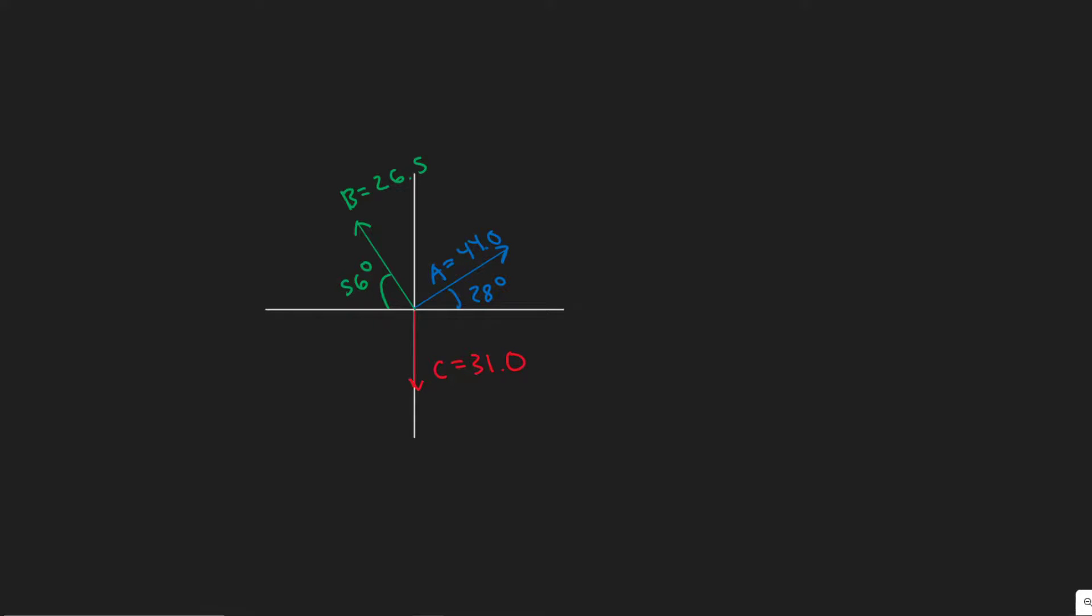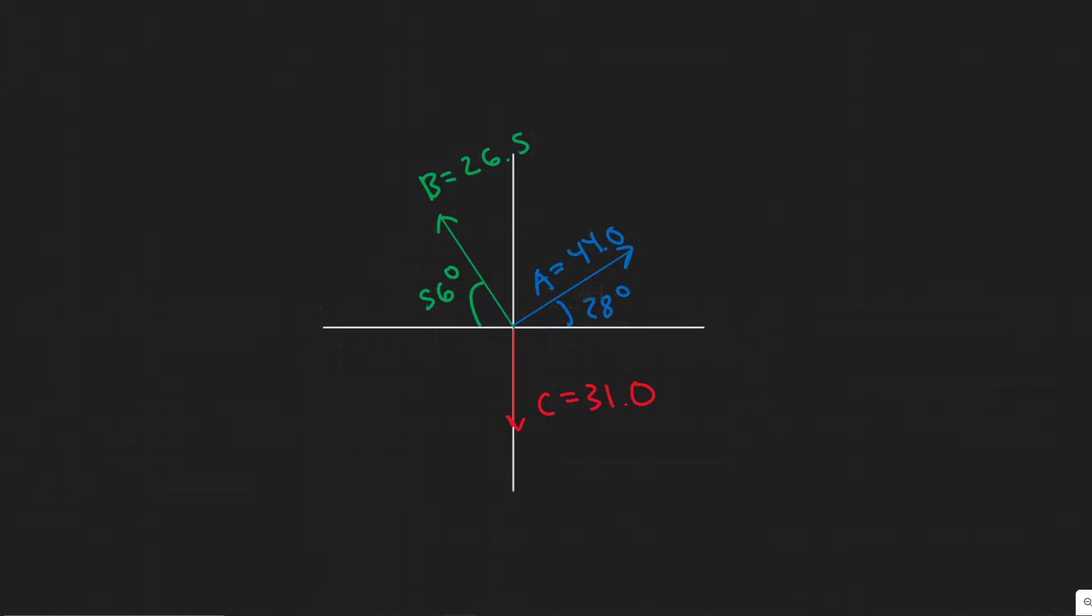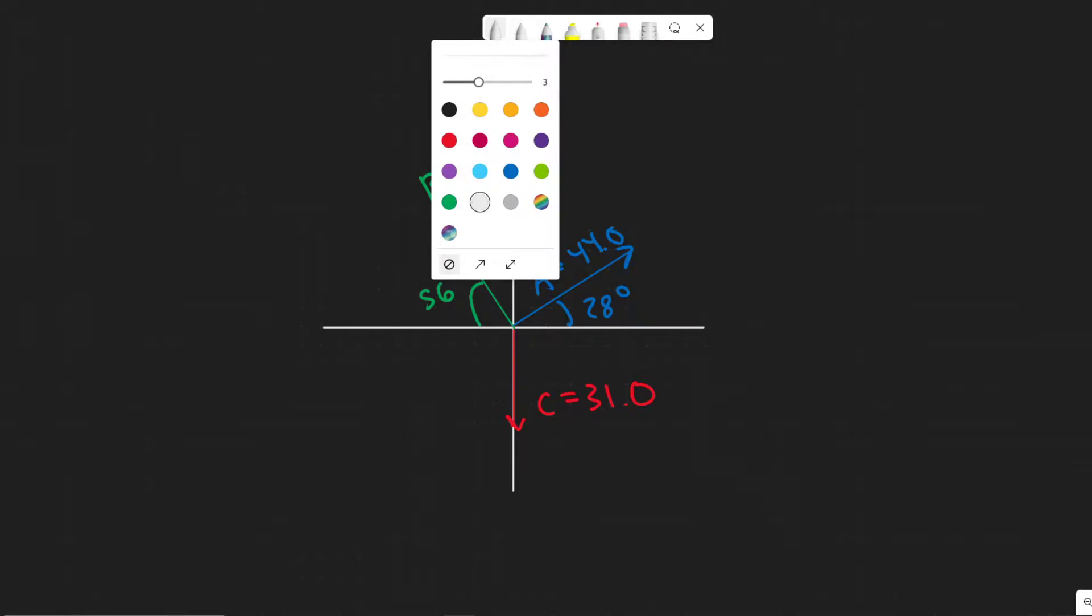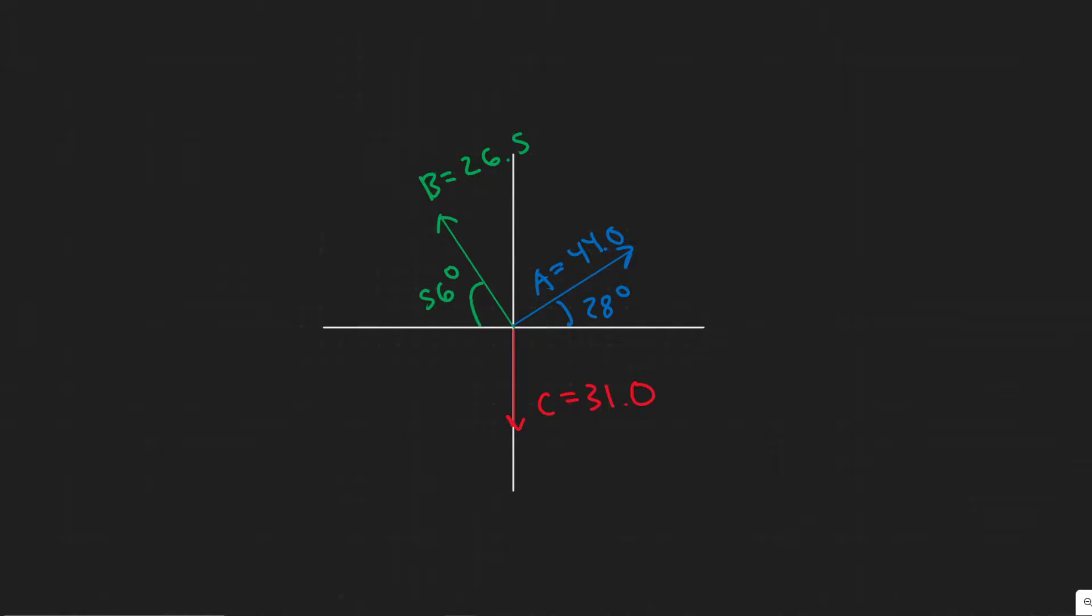Okay, so in this problem we're told to determine the vector A minus C given the vectors A and C in this figure. We're given this graph here with a bunch of different vectors on it - we have B right here, we have A, and then we also have C. Keep in mind though, for this one, what we're finding is A minus C, so we're basically subtracting C from vector A.